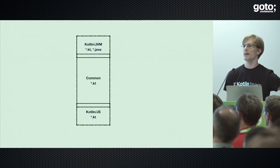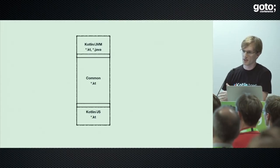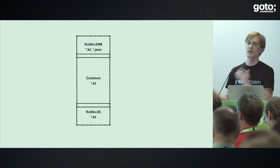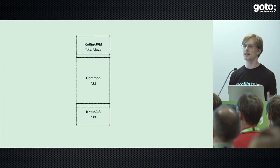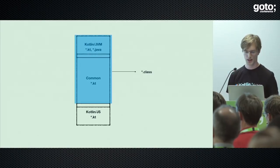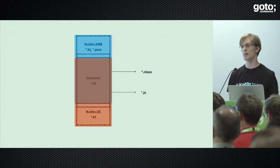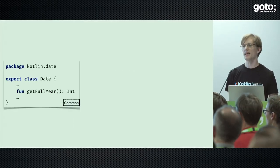How does the compilation process work for such a mixed project? We have common code, JVM-specific code, and JavaScript-specific code. We cannot compile common code by itself because there's no real destination — we can't compile to Java classes for JavaScript, and we can't compile to JS for the JVM. So to compile a common module, you combine it with a specific platform implementation: common plus JVM code compiles to class files; common plus JS-specific code compiles to JavaScript files.